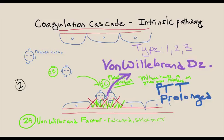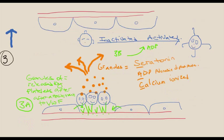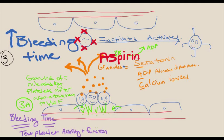In the intrinsic pathway, the PTT is prolonged. If testing for von Willebrand disease, the PTT will be prolonged. After this primary platelet plug is formed, platelets release granules containing serotonin, ADP (adenosine diphosphate) which causes platelets to become active, and calcium ions. Aspirin and similar drugs inactivate platelets, prolonging bleeding time, not PTT or PT.